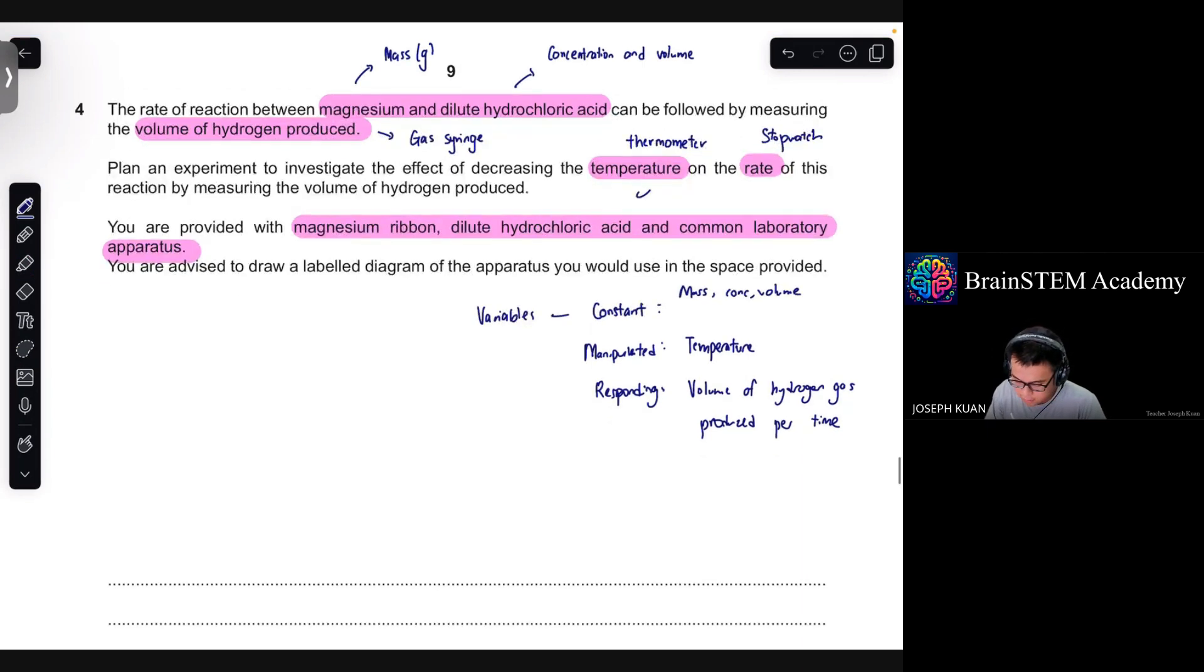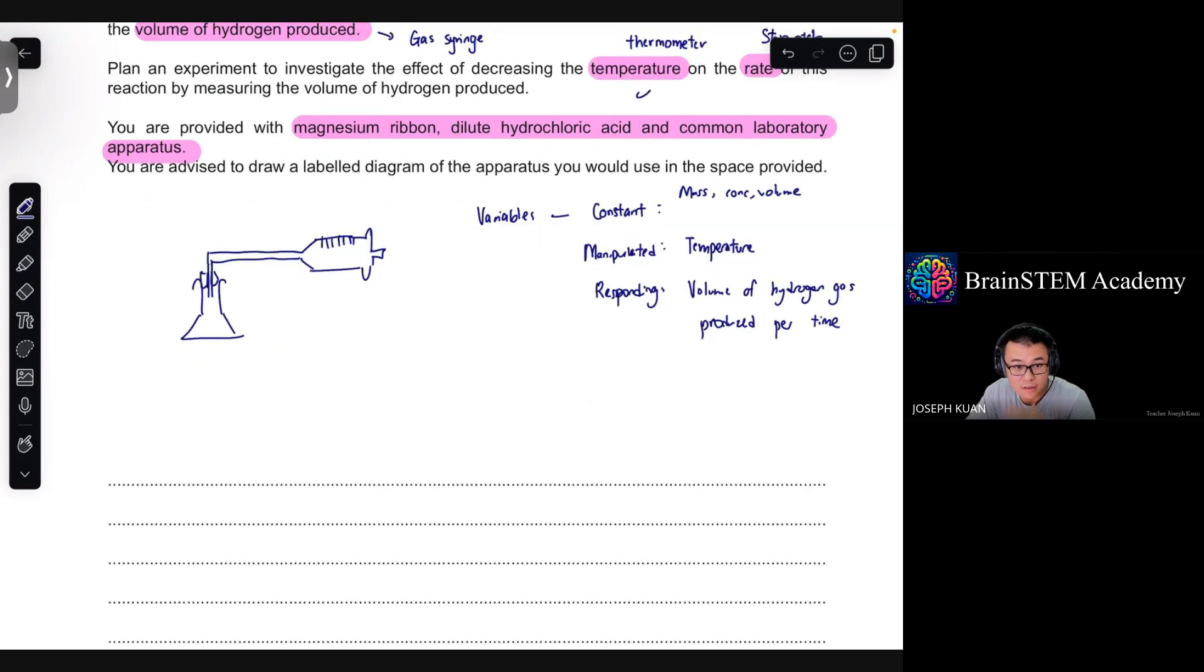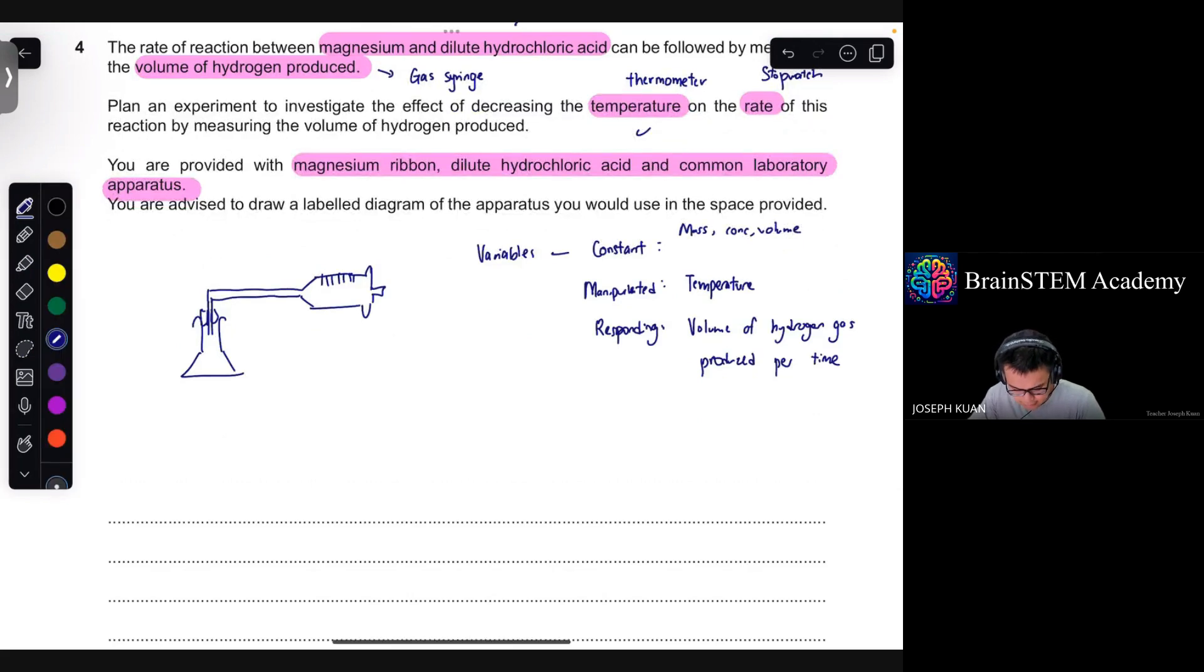Regarding the setup, this is a rate setup. So means that you will need a stopwatch and then essentially you need a conical flask maybe to fill the acid with. And then put the magnesium ribbon into the acid. And then followed by a rubber stopper with a delivery tube connected to a syringe. So that's the rough sketch of the setup. You can search for more accurate diagrams on the internet.